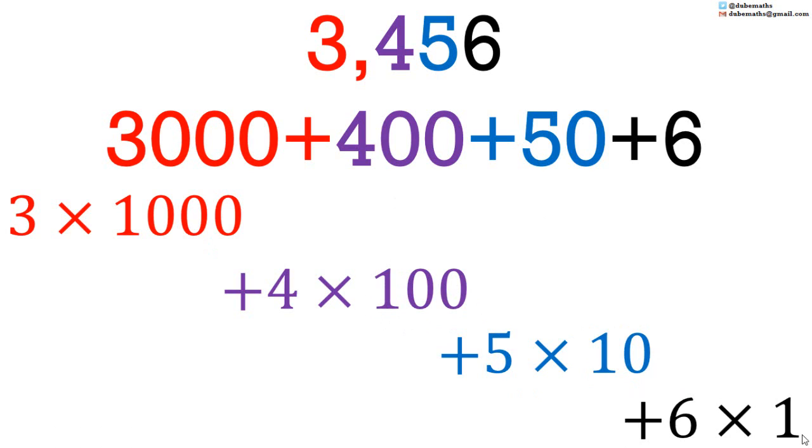Do you know that there is supposed to be a decimal point in all numbers but it is not written? 3456 has a decimal point at the end. If you don't see a decimal point, it means that it is supposed to be at the end.